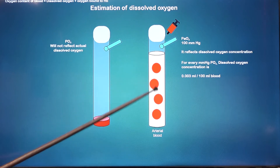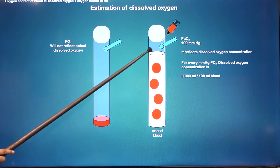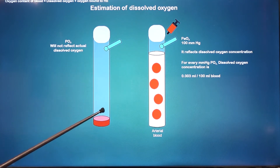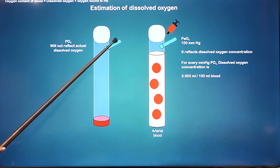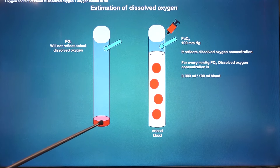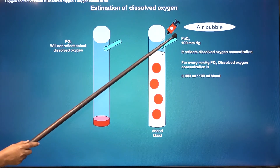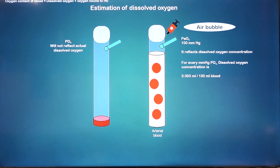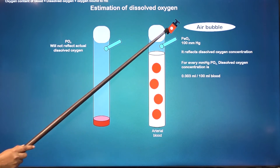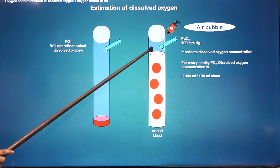If instead of filling the test tube with enough blood and leaving only a small airspace, you took less blood and there was a lot of airspace, then after equilibration the measured partial pressure would be more reflective of air than blood — you would overestimate partial pressure of oxygen in blood. The same argument holds if there was an air bubble in the blood sample; the oxygen in that air would also contaminate your reading.